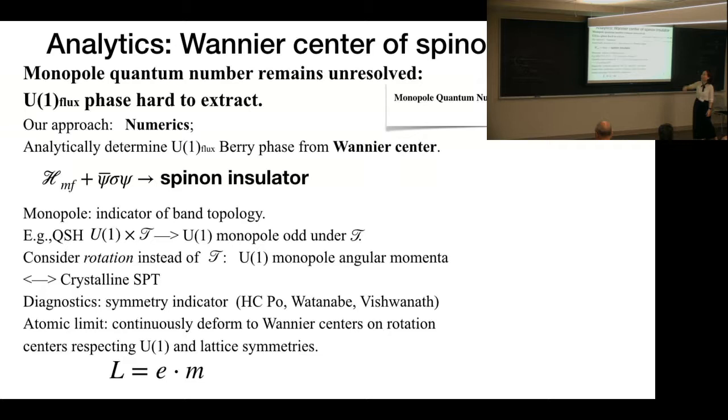We gap this U(1) Dirac spin liquid by a quantum spin Hall term. And forget about the gauge fluctuations, so it's just a spinon insulator. And now, the monopole is just an indicator of the band topology, just as previous explanation. For example, in this quantum spin Hall system, which is protected by the U(1) particle number conservation and time reversal...